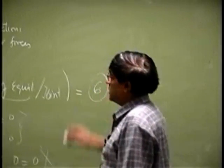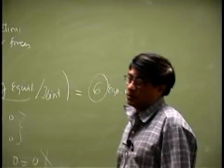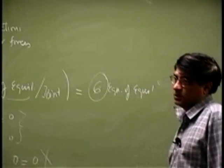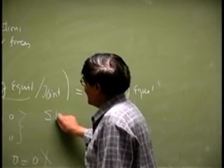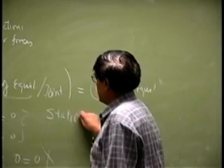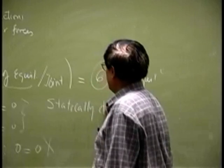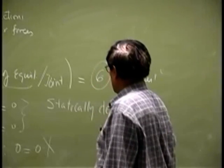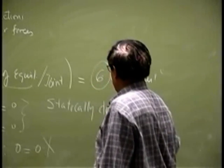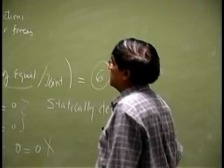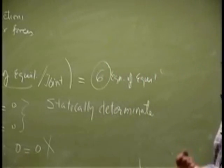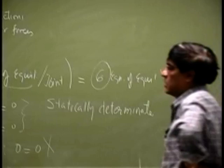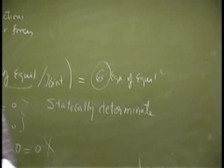So we have six unknowns and six equations. This problem is therefore statically determinate — in other words, we have enough equations to solve for every unknown in this particular problem.